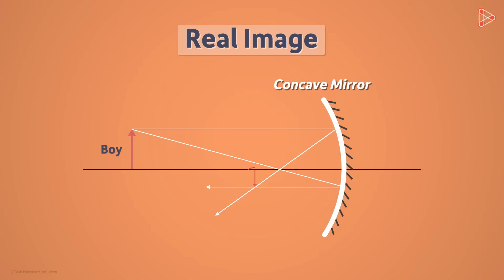You see that in this case, the image is formed on the same side of the mirror as the object is. Real images are always formed on the same side as that of the object. And light rays do reach this position.